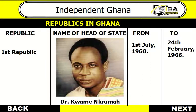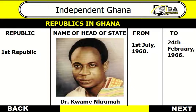When Ghana gained independence on 6th March 1957, the Queen of Britain, Queen Elizabeth, was still the head of state. However, on 1st July 1960, Ghana became absolutely free from Britain's dominance and elected our first president, Dr. Kwame Nkrumah. His reign lasted from 1st July 1960 to 24th February 1966, when his government was overthrown by Emmanuel Kwesi Kutuka, ending the first republic.